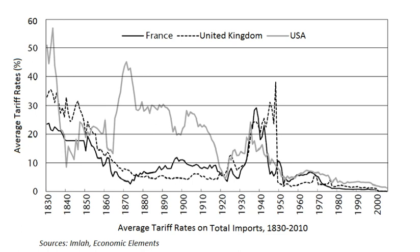According to Paul Bairoch's Myths and Paradoxes of Economic History (1994), the industrialized world of 1913 is similar to that of 1815 — an ocean of protectionism surrounding a few liberal islets, with the exception of a short free trade interlude in Europe between 1860 and 1892. Only two islands of liberalism emerged in the developed world: Great Britain and the Netherlands.